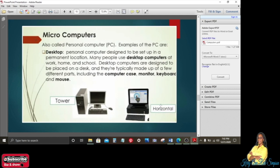And they are typically made up of a few different parts including the computer case, which we call the system unit, the monitor, and the keyboard and the mouse as well. So we're looking at two different types of micro desktop computers basically: tower and the horizontal type.